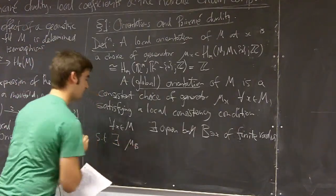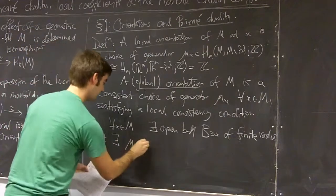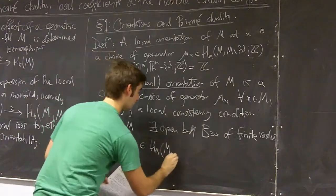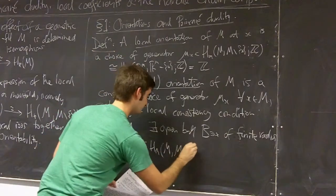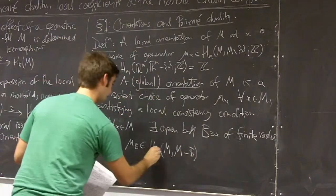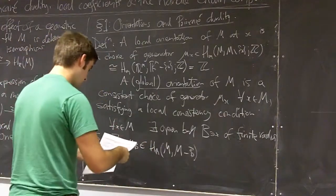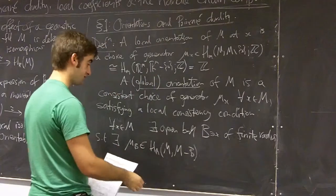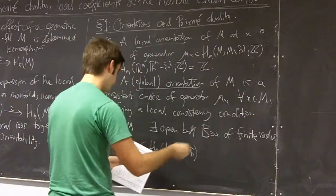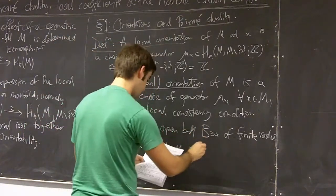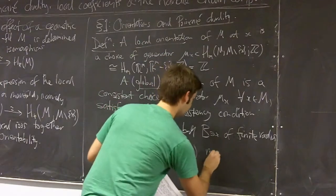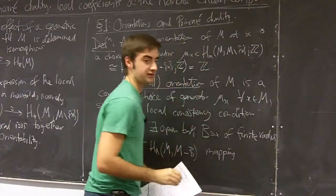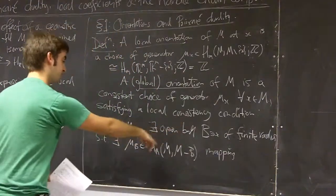there is a generator μ_B in homology of M relative to M minus this B, which again is going to be Z by excision, and this generator should map